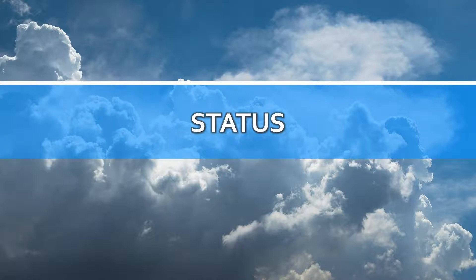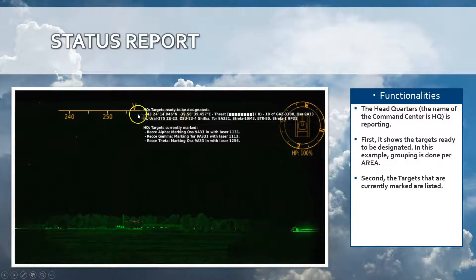A status report can be shown. This is an example of a status report in a detection area scenario. You see the latitude-longitude coordinates of the threat. The threat level—in this case the highest threat level is 8—because there is a SAM in there that is pretty dangerous for pilots. The second part of the status report provides which items are currently lased or marked by which reconnaissance vehicle. So reconnaissance vehicle alpha is marking target with laser code 1131, which can be used by the A-10C pilots to configure their laser codes and start attacking those targets.